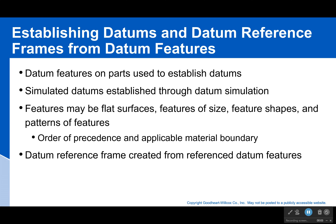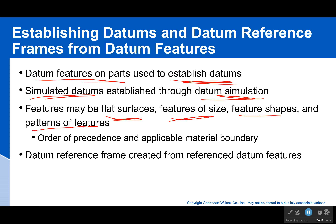Let's do a little bit of review as we go into some new material. Datum features and parts are used to establish our datums, and then we simulate those datums through datum simulation — that means we take other objects, our tools, to simulate that perfect surface. These datum features can be flat surfaces, features of size, feature shapes, and even patterns. There can be material boundary conditions, and there's also an order to how things are controlled — and if that order is changed, it will change how it's controlled. All of this goes to make our datum reference frame from our datum features.